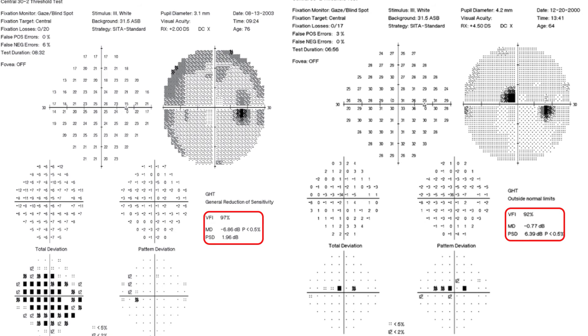On the left side, we have a general reduction of sensitivity with a mean deviation of minus 6 and VFI of 97%.